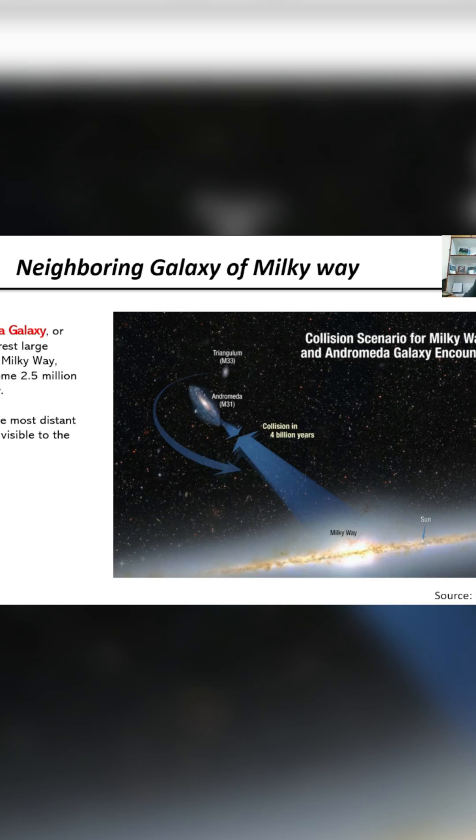We are looking at the nearest galaxy, which is our neighboring galaxy, the Andromeda galaxy. It is also called M31, is the nearest large neighbor of the Milky Way, and is about 2.5 million light years away. So still it is quite far, 2.5 million light years away.